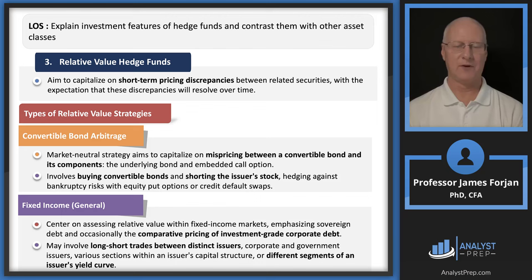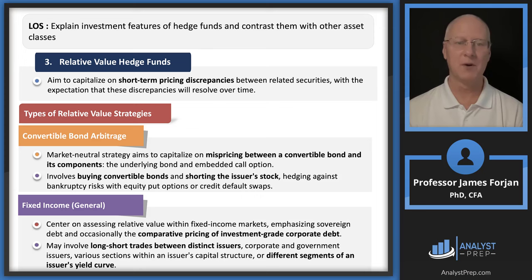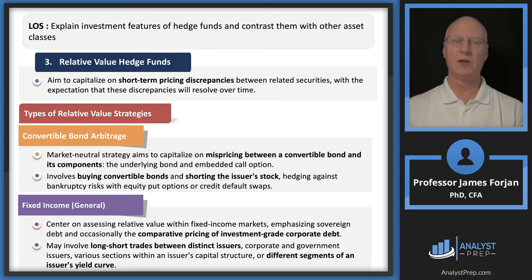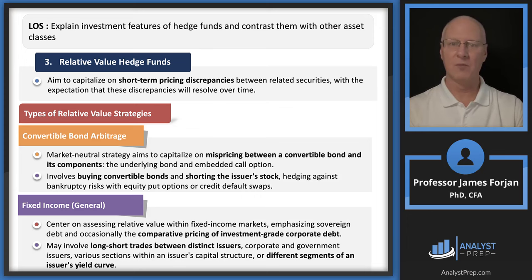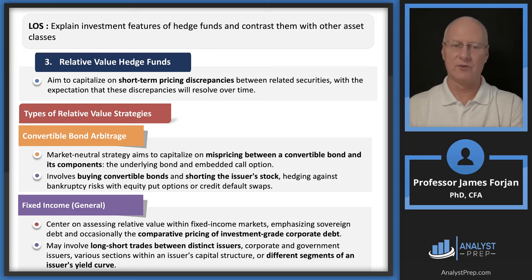Relative value hedge funds — the first strategy is convertible bond arbitrage. You look at a company's balance sheet and find bonds with embedded options, such as a conversion option. You buy the convertible bond — which at some point converts into shares of stock — so you're long the convertible bond but short the stock. This is a natural hedge against bankruptcy risk. You can execute this by buying bonds and shorting the stock, or through the options market or swap market.